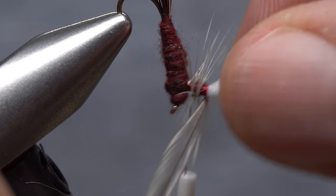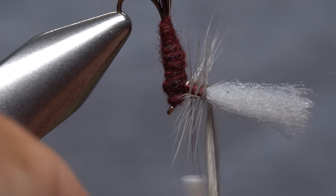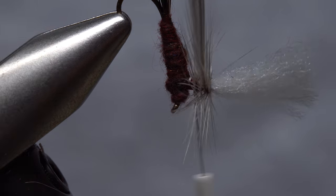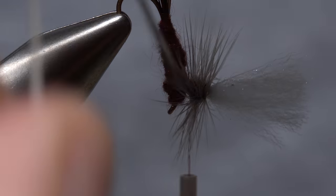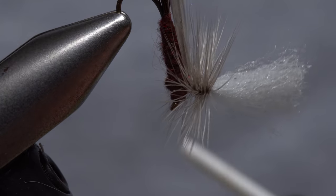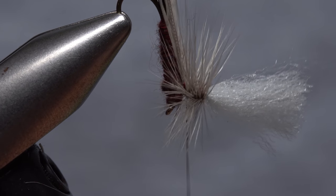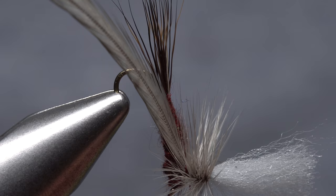Leave a small space between each wrap. When you reach the top of the post, start heading back down with hackle wraps, placing them in the open spaces as you go. When you reach the base of the post, take two or three thread wraps around it to secure the hackle feather.